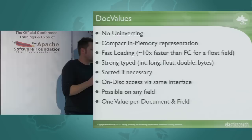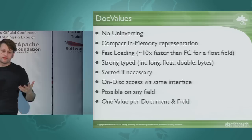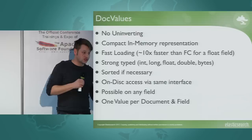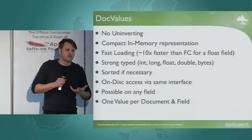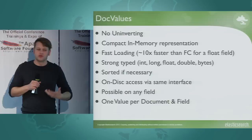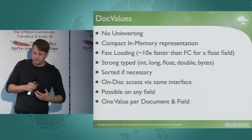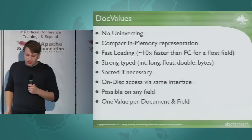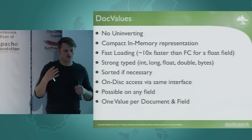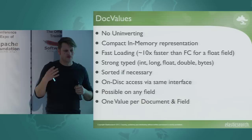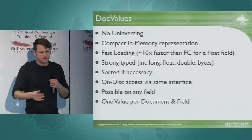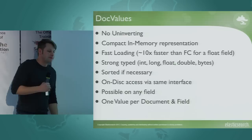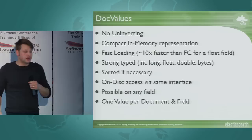We now have a very dense storage solution called doc values where you can assign one value per document per field. It's not multi-valued at this point, which may be a limitation for some. The benefits: no un-inverting, a very compact representation in memory, pre-built so there's literally no runtime cost except loading from disk. Loading is much faster because you don't iterate all terms, parse them, and create objects. It's also strongly typed - you can specify integer 8-bit, 16-bit, 32-bit, 64-bit, float 32, float 64, or byte arrays. You can have Lucene deduplicate bytes if you share many values, and have them pre-sorted for sorting use cases. We don't do any extra work if we don't need to.